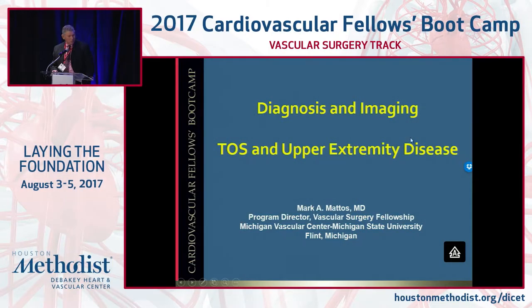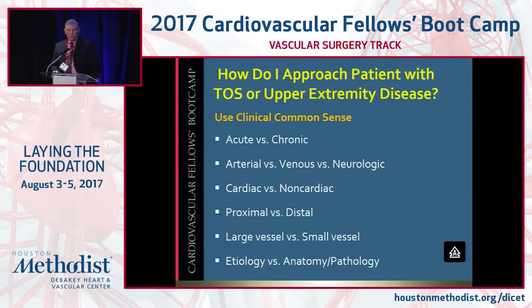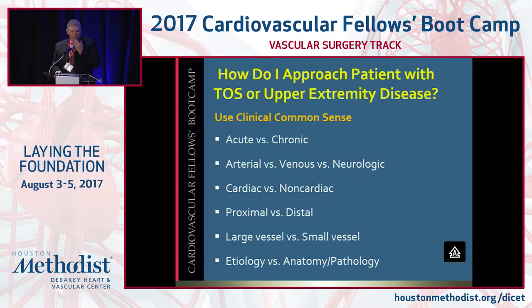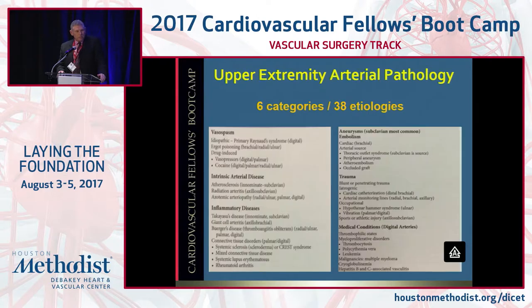No disclosures, and these are the acknowledgments. All the talks are given by somebody else earlier, and we build on them, which I think is a great idea. So the question is, you're in clinic, tired, and somebody comes in with vague symptoms. How do I approach the patient who might have TOS or an upper extremity disease? Well, you have to categorize how you think. Is it acute versus chronic? Is it arterial, venous, or neurologic? Is it cardiac or non-cardiac in origin? Is it proximal or distal? Is it large vessel or small vessel? And you base it on etiology, anatomy, or pathology.